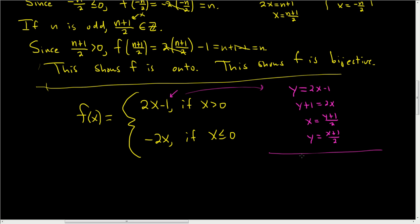For the bottom piece, we set y equal to negative 2x and solve for x by dividing by negative 2: x equals negative y over 2. Then switch x and y: y equals negative x over 2. So the inverse function is a piecewise function.